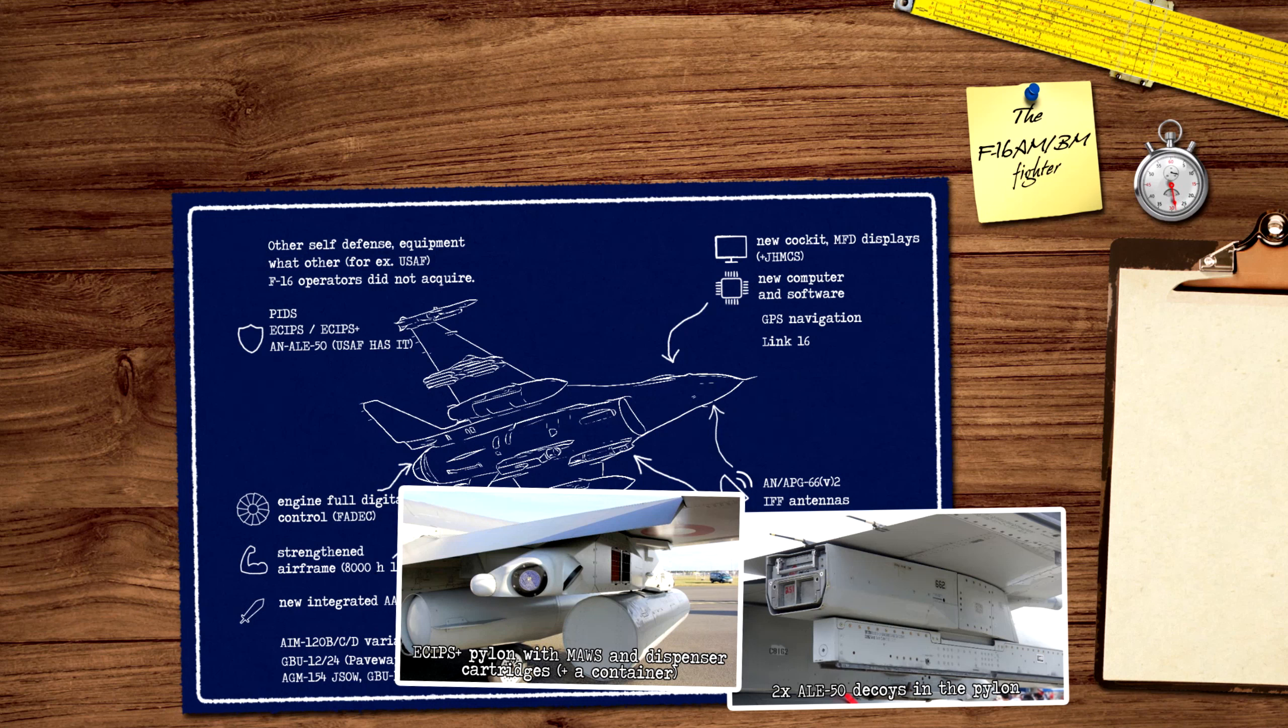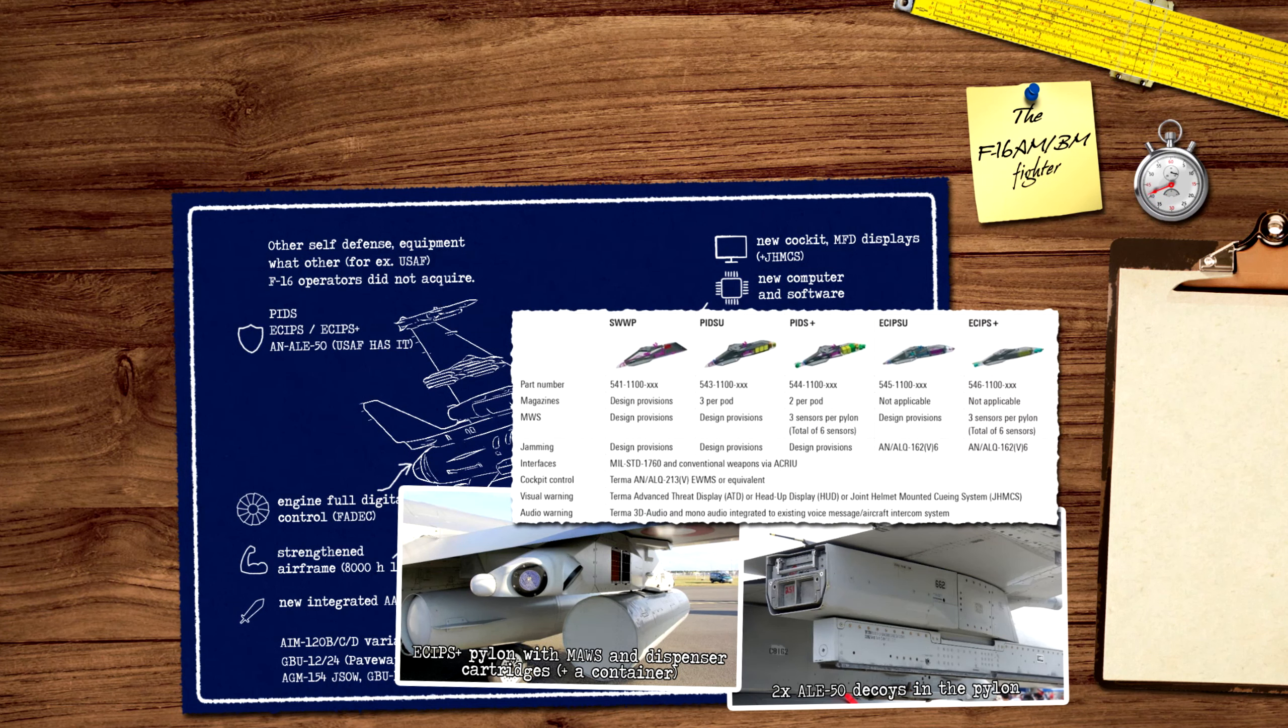At the same time, single-use active radio decoys exist, what can be launched from cartridges. The ECIPS and ECIPS Plus pylons provide additional jamming capability, besides the ALQ-184 or 131 jammer pods, what can be carried under the centerline hardpoint. The new jamming system is the AN/ALQ-162 V6. The ECIPS Plus pylon has an additional feature, a missile approach warning system. It uses infrared cameras to detect the heat of the infrared emission of the incoming missiles. The data link ensures far better situational awareness. Information from reconnaissance assets of the NATO and US units can be utilized quicker compared to speech in radio communication.